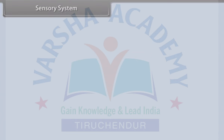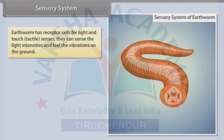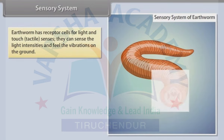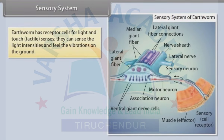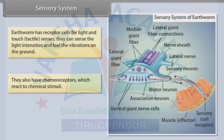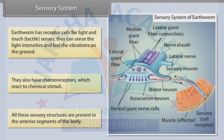Sensory system: Earthworm has receptor cells for light and touch (tactile senses). They can sense light intensities and feel vibrations on the ground. They also have chemoreceptors which react to chemical stimuli. All these sensory structures are present in the anterior segments of the body.